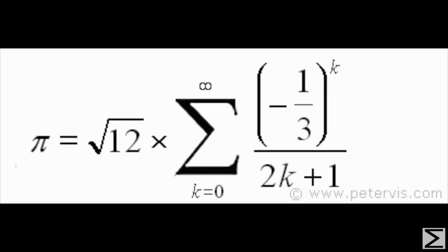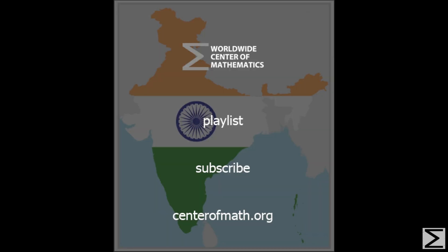Using this approximation, he was able to approximate pi correctly to 17 decimal places, namely 3.14159265358979324. Thank you so much for watching this video on Madhava. Be sure to subscribe to our YouTube channel and check out the rest of the series.